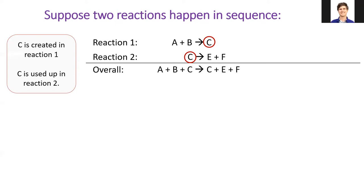Notice that chemical C is both a reactant and a product. Since it's on both sides of the reaction equation, we can delete it, just as we did for spectator ions when writing net ionic reactions in chapter 4. This reaction simplifies to A plus B forms E and F.